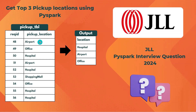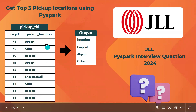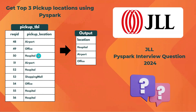If you look into the pickup location details, we have airport, office, hospital, and so on. Airport appears two times, office also two times, but hospital appears four times. So hospital should come in the first position. Airport and office will come in the next two places, and the least frequent pickup location is shopping mall. In this way we need to get the top three pickup locations chosen by customers.